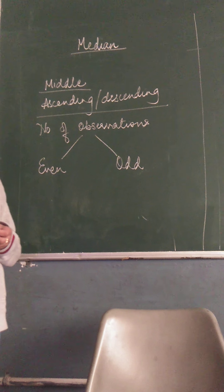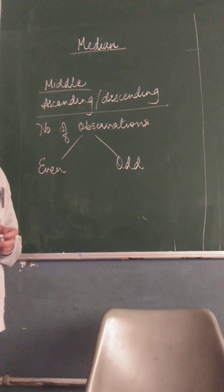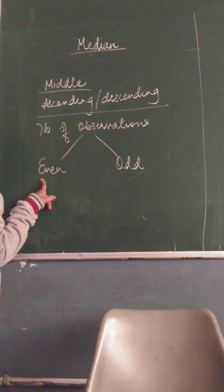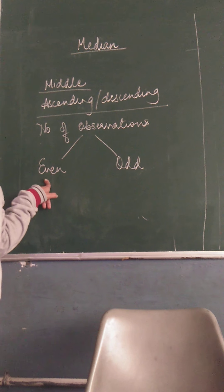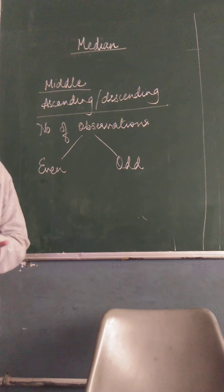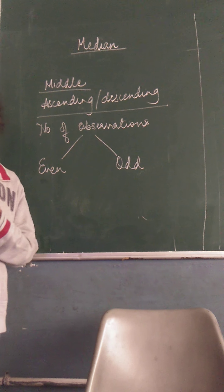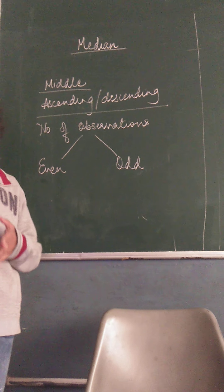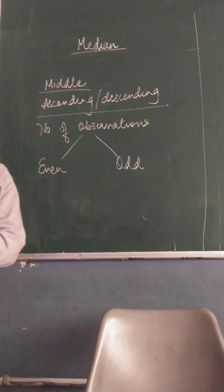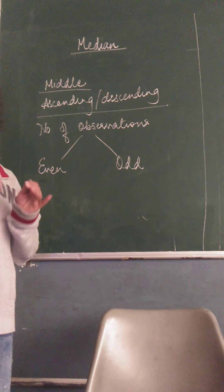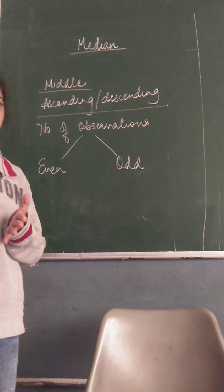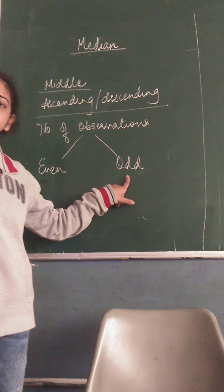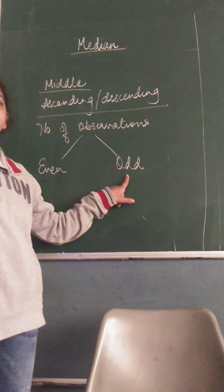For example, I have data of the marks of 10 students in a particular subject — that is a data with an even number of observations. Or if I say there is a list of the number of students who took admission in a particular school in the last 5 years, then the number of observations will be odd.